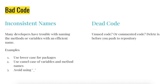Many developers have trouble naming methods or variables with an efficient name. Here are some examples you should always be following: use lowercase for packages — packages cannot be camel-cased. Use camel case for variables and methods, avoid using underscores, and avoid names starting with numbers. There are a lot of articles on the internet available on how to name variables and methods efficiently — I suggest you take a look at that.